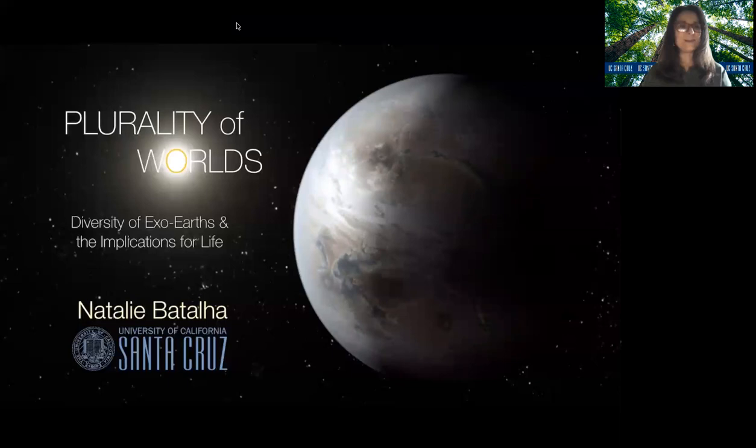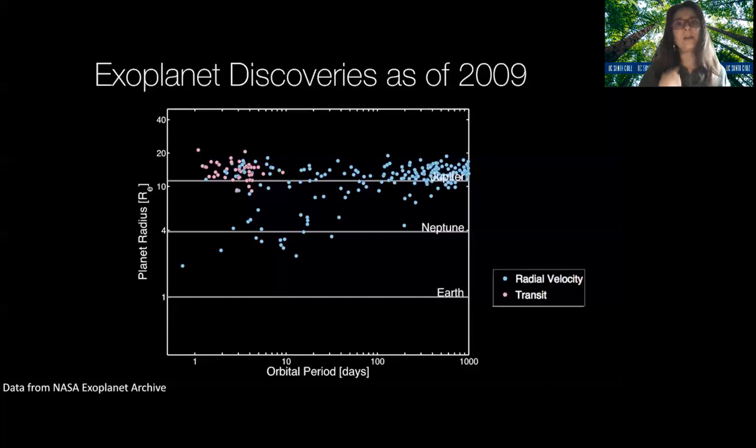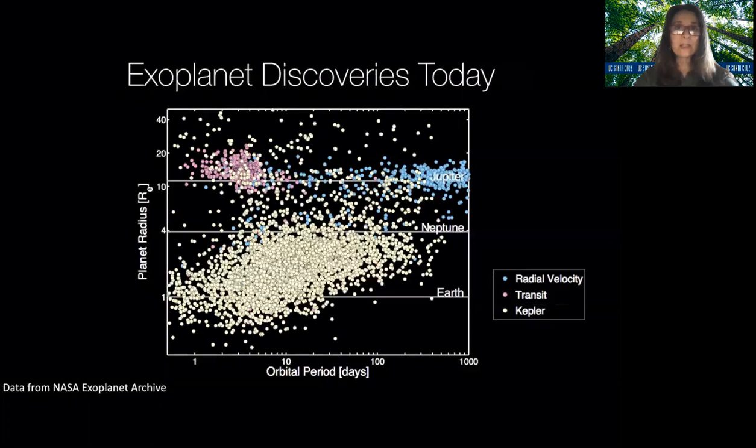So this is what the scene looked like in 2009 on the eve of the launch of NASA's Kepler mission. There were less than 200 planets known at that time, and 90% of them were larger than Neptune. Fast forward eight years and 4,000 discoveries, and we have the yellow points in this diagram, which are the Kepler discoveries. Now, about 90% of the planets known to humans are smaller than Neptune, so the scene has changed dramatically.